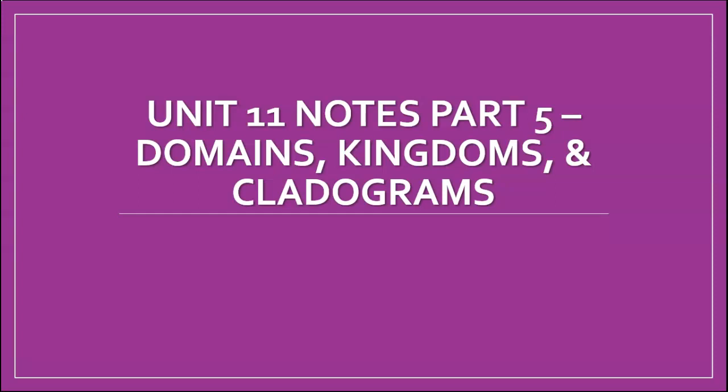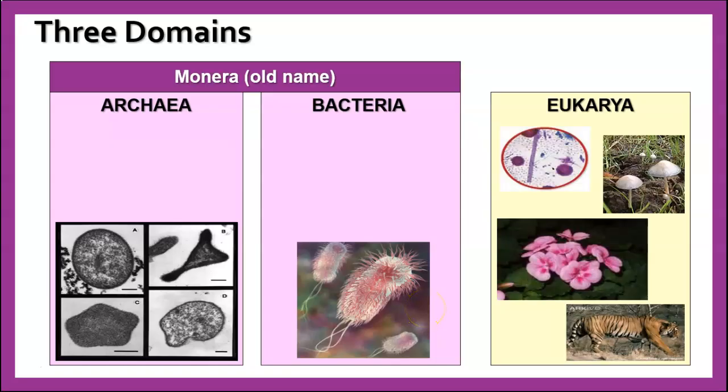Just talking about the three domains and the kingdoms. Up until probably sometime in the 1980s, all the prokaryotes were included in one kingdom called Monera. But in the late 80s, early 90s, scientists realized that there were some fundamental differences between two different groups of prokaryotes. Around that same time, they decided they needed a bigger category than kingdom to classify things, and so they came up with the domain category.